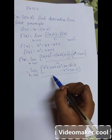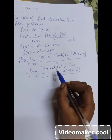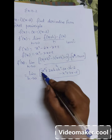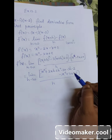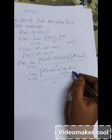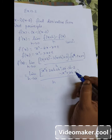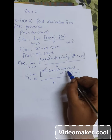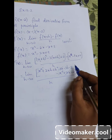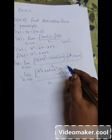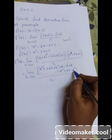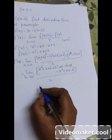From the numerator, x squared and minus x squared cancel. Minus 3x and plus 3x cancel. And plus 2 and minus 2 also cancel.